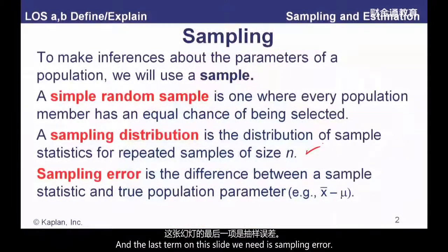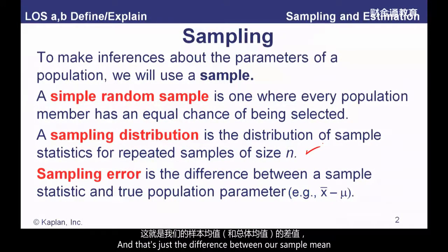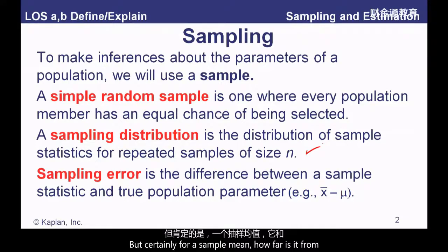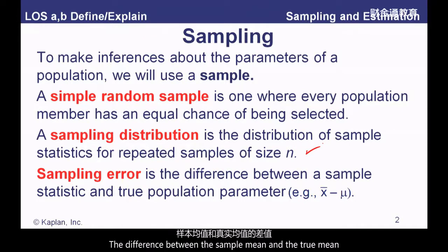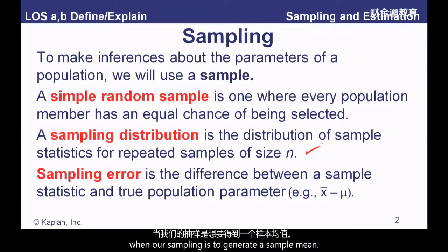The last term on this slide is sampling error — the difference between our sample mean and the true population mean. That's our sampling error: how far the sample mean is from the true mean.